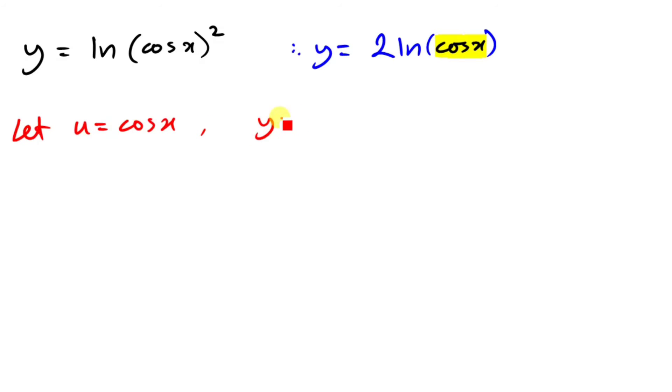This means that y equals now, if we update this equation and replace that with u, we're going to have 2 ln u. Okay, let's see what happens now.